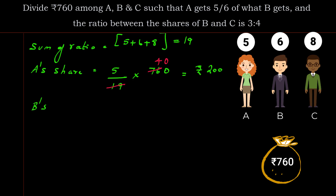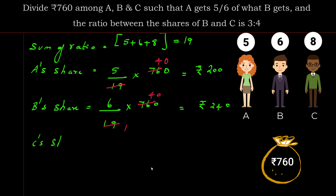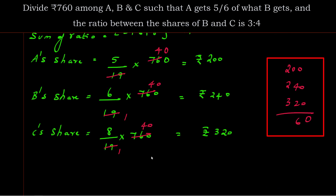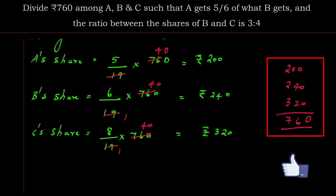C's share = 8/19 × 760 = 8 × 40 = Rs. 320. To verify: sum all shares — 200 + 240 + 320 = 760, which matches the total amount. The answer is correct.